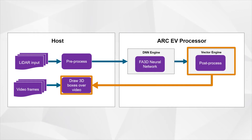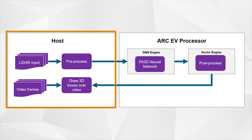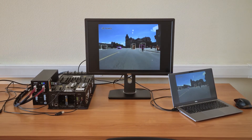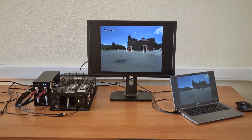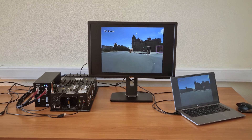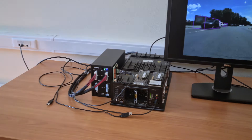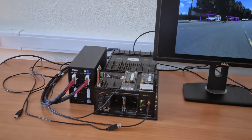The vector engine sends the detected object locations back to the host. In this demo, the host is an x86 PC, which is used to read the LiDAR input, do some pre-processing, send the data to the EV, and render the 3D boxes around the detected objects. Here is our demo setup with our PC-based host and EV processor implemented inside the Synopsys HAPS 80 FPGA-based prototyping system.